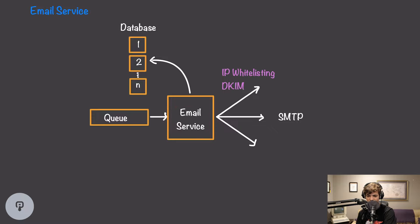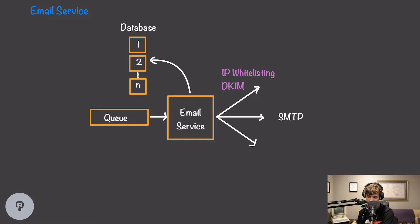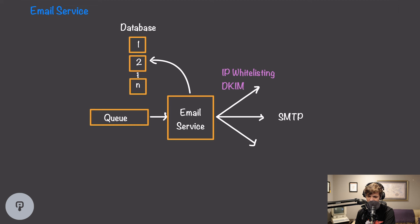Another issue at scale is being blocked by destination email servers. We'll need to work with larger email providers like Google, Apple, and Microsoft to ensure our IP addresses are whitelisted so customers can send as much mail as they want. We also need to make sure our email service conforms to security protocols such as Domain Keys Identified Mail (DKIM), which helps ensure our system isn't blocked by spam detection.